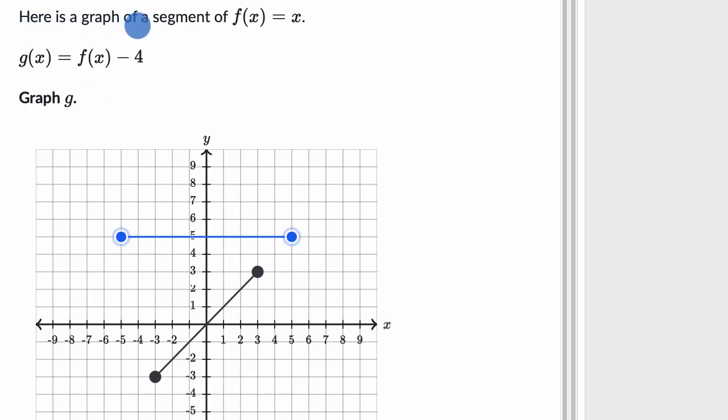We're told here is a graph of a segment of f(x) = x. That's this graph right over here. And they say that g(x) = f(x) - 4. Graph g, and we can graph g with this little widget here.